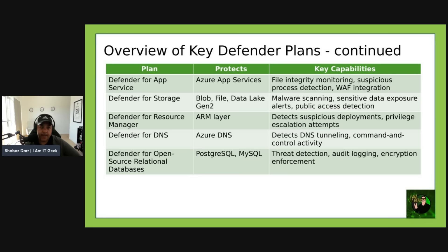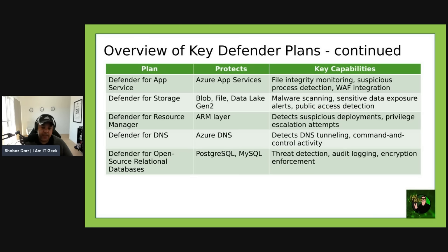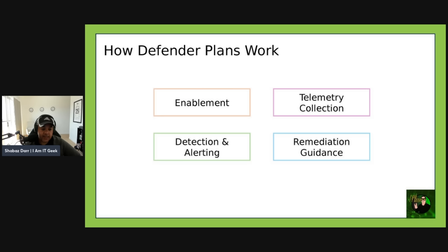Defender for App Service protects app services with file integrity monitoring, suspicious process detection, and WAF integration. Defender for Storage covers Blob, File, Data Lake Gen 2 storage with malware scanning, sensitive data exposure alerts, and public access detection. Defender for Resource Manager protects the ARM layer, detecting suspicious deployments and privilege escalation attempts. Defender for DNS protects Azure DNS, detecting DNS tunneling and command-and-control activity. Defender for Open-Source Relational Databases covers PostgreSQL and MySQL with threat detection, anomalous login detection, and encryption enforcement.